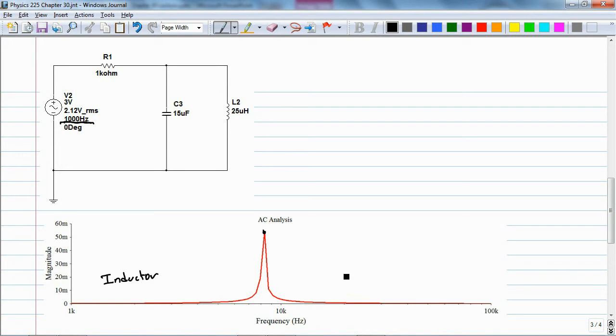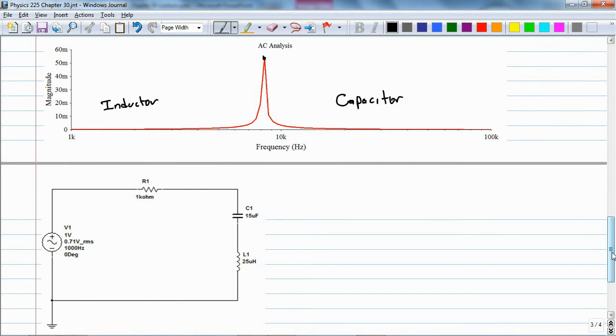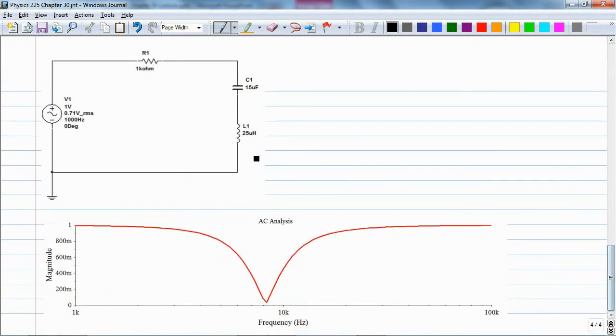So this is the inductor taking over, giving low reactance path, and this is the capacitor, giving the lower reactive path. Now we can flip this from parallel to serial, and notice that the magnitude of the potential across these two are fairly high, and then there's a point at which it drops to very close to zero, and then back up.